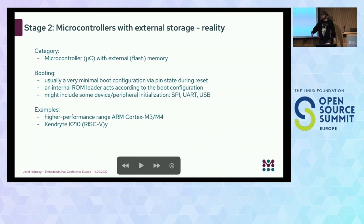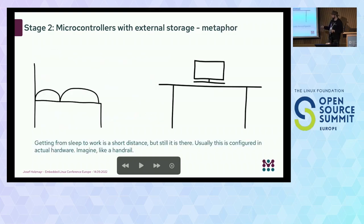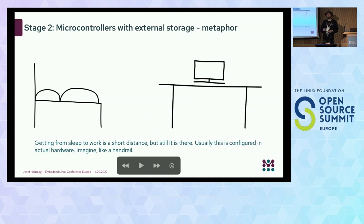This is stage two — we add pull-ups and pull-downs to pass information into the microcontroller to tell it how the external memory actually looks. Once the microcontroller has found that external memory, it works just like stage one: it looks at a specific address and executes whatever is there. Examples include higher-performance microcontrollers — I've personally done a lot on Cortex-M3s; Cortex-M4s can do pretty much the same. On RISC-V, the Kendryte is similar. The analogy: you fall out of bed, grab a handrail that tells you where your desk is, and walk along it until you find your desk and sit down.